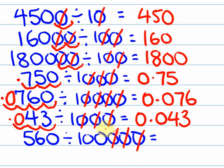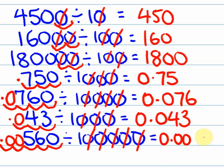This one, one, two, three, four, five. I have to move the decimal place one, two, three, four, five. All right, and I'm going to end up with two zeros in there. I'm going to end up with the answer of 0.0056.